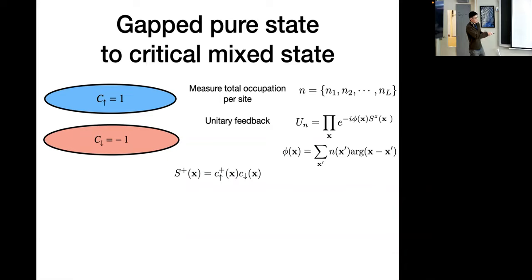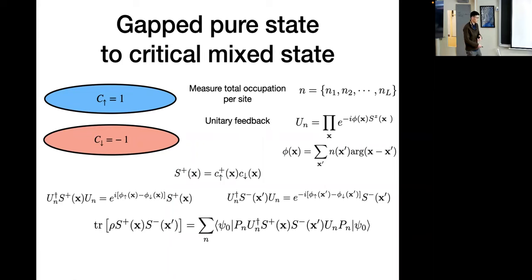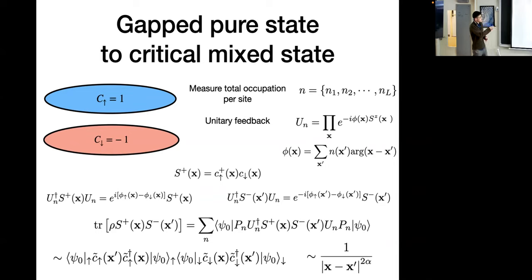The spin operator S-plus is just C-dagger-up times C-down. After applying this unitary feedback, this just attaches one of these phase factors to the operator, and similarly for S-minus. A fairly straightforward calculation shows that after this measurement feedback, you get a mixed state on the spin system that has power-law decay originating from the non-local order of the Chern insulator. This is a pretty interesting example where we started with a gapped pure state, and with purely local quantum operations plus non-local classical communication, you can get a critical mixed state. It remains an open question to understand the entanglement properties of this resulting mixed state.